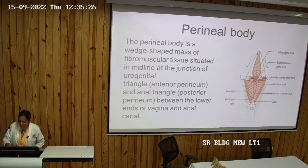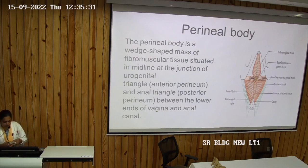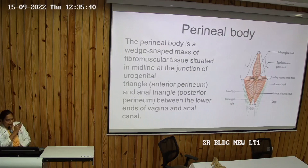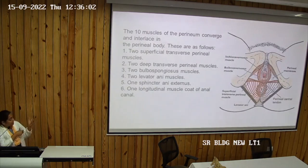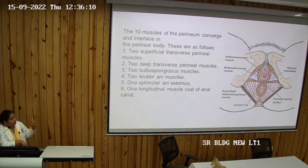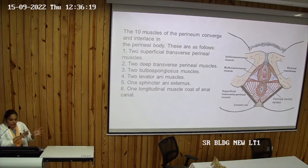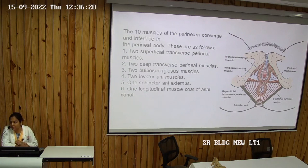What is the perineal body? It is the central fibromuscular mass present at the junction between the anal triangle and the urogenital triangle. Ten muscles converge and meet here. It is a very important structure in females because it provides support to the pelvic diaphragm. The muscles converging here are: two superficial transverse perineal muscles, two deep transverse perineal muscles, two bulbospongiosus muscles, two levator ani muscles, the external anal sphincter muscle, and the muscular coat of the anal canal — forming a fibromuscular mass known as the perineal body.